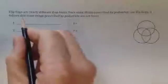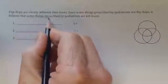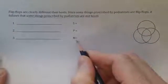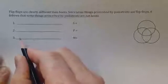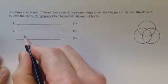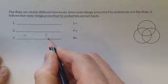We know that the conclusion, which is indicated by it follows that, is some things prescribed by podiatrists are not boots. The conclusion, when we use S, P, and M as term variables, always contains S and P, the subject of the conclusion and the predicate of the conclusion.